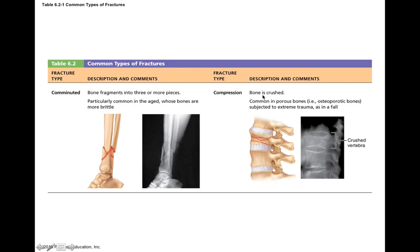A compression fracture is where the bone is actually crushed. You can see this along the spine in the body of the vertebrae — if it's been crunched together, that's a compression fracture. This is more common in porous, osteoporotic bones subjected to extreme trauma like a fall. The body of a vertebra is mostly spongy bone in cross section, which is why compression fractures are more common there.